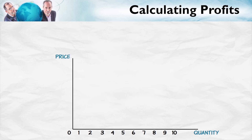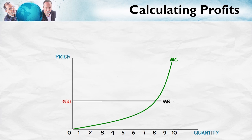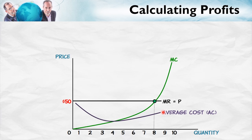Here's our typical marginal cost curve and here is our marginal revenue curve equal to price. We know that the profit maximizing point is where marginal revenue equals marginal cost. Here is our average cost curve and notice it has the shape I described: it starts off high, falls, reaches a minimum, and then goes right back up again.